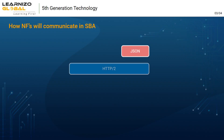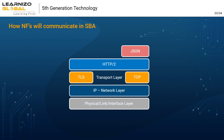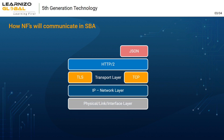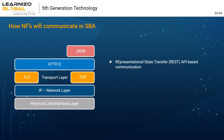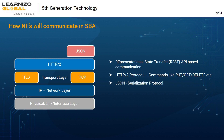How network functions will communicate in the service-based architecture: all these network functions will communicate with each other in REST API based communication using HTTP/2 protocol, and all 3GPP specific data will be carried as JSON schema. At the transport layer, we can use TLS (transport layer security) protocol, but other means of security can be provided based on the preference of mobile network operators.